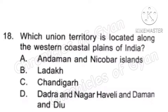Question 18: Which union territory is located along the western coastal plains of India? The western coastal plains are located between the Western Ghats and the Arabian Sea. The correct answer is Option D, Dadra and Nagar Haveli and Daman and Diu.